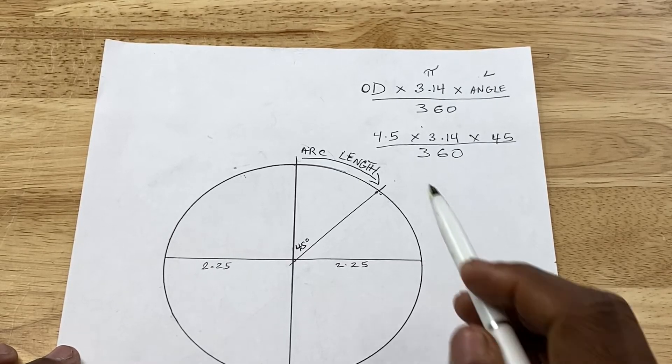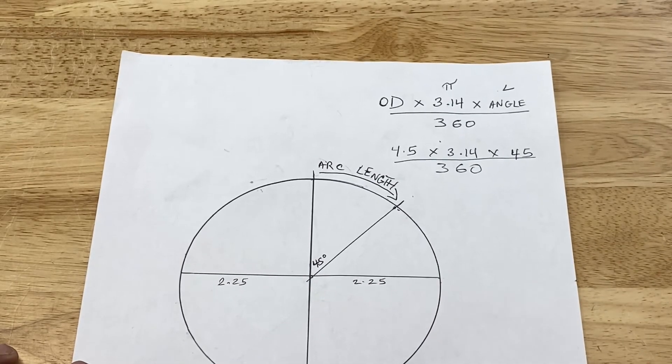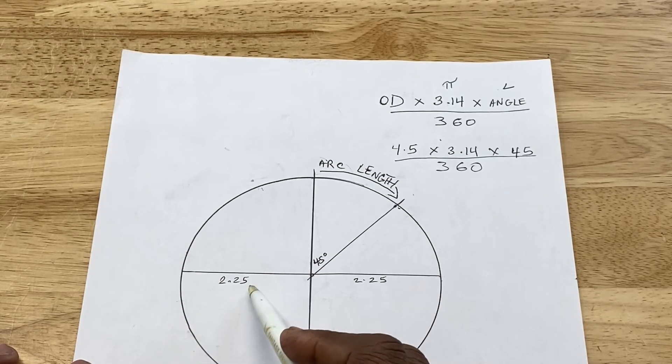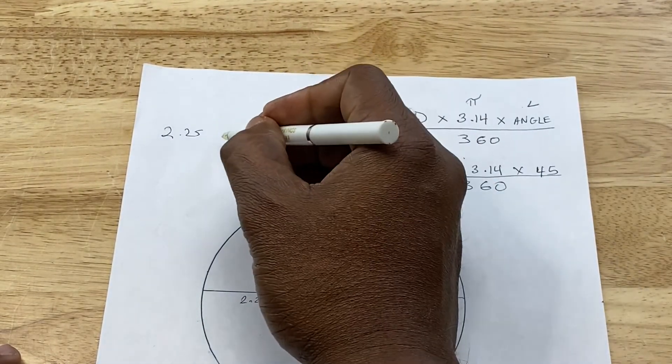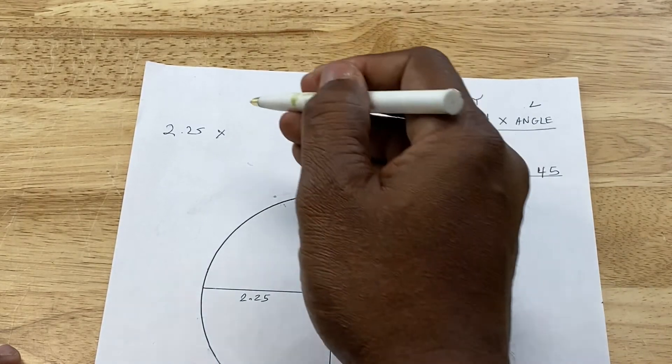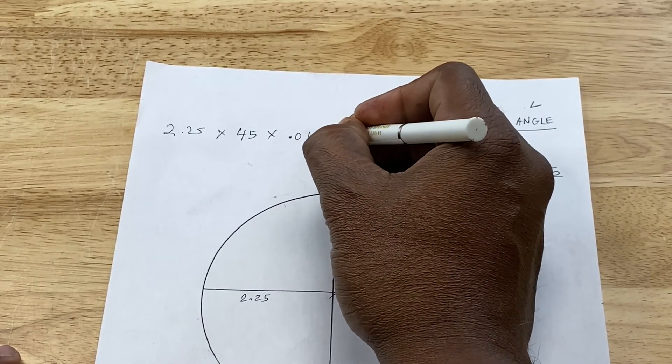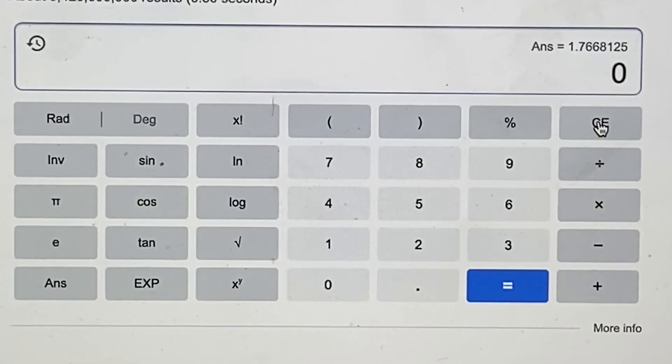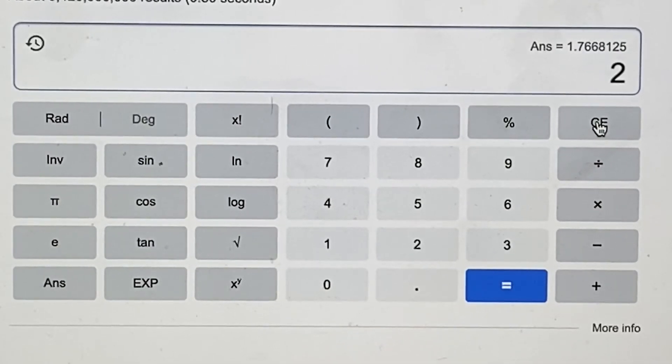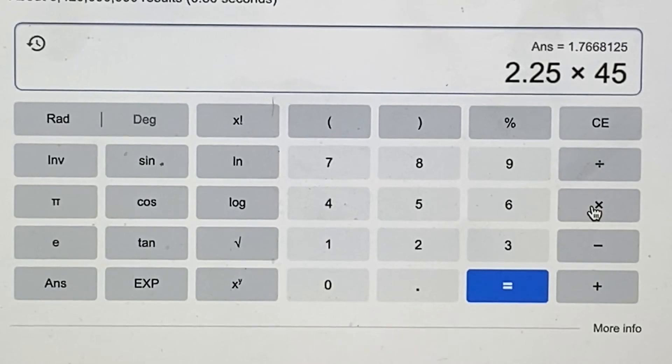Now there's another formula you can use to figure out the arc length. And that's taking the radius of your circle, and we know that the radius is half of the diameter. So we see here that the radius is 2.25 inches. So you say 2.25 inches times the angle, which is 45 degrees, times 0.01745. So let's go back to the calculator and see what we get. So we got the radius, 2.25 times the angle, which is 45 times 0.01745.